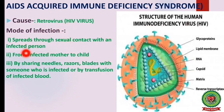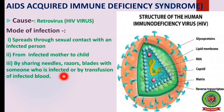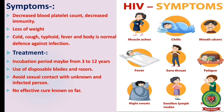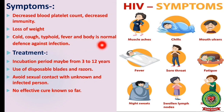HIV spreads through sexual contact with an infected person, from an infected mother to child, by sharing needles, razors, or blades with someone who is infected, or by transfusion of infected blood. Symptoms include decreased blood platelet count, decreased immunity, loss of weight, cold, cough, typhoid fever, and failure of the body's normal defense system against infection.